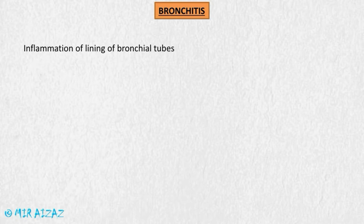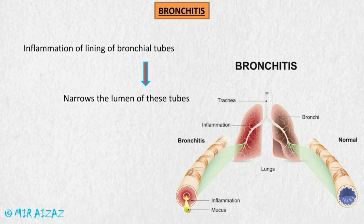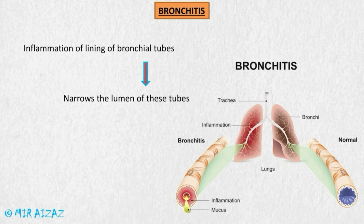Bronchitis is the inflammation of the lining of bronchial tubes, which causes narrowing of the lumen. As you can clearly see in this picture, on the right-hand side is a normal bronchial tube with no inflammation and a wide lumen, and on the left-hand side is an inflamed bronchial tube. The presence of inflammation decreases the lumen of the bronchial tube, and due to inflammation and mucus production, the flow of air through these bronchial tubes is very difficult.